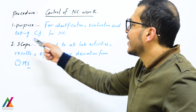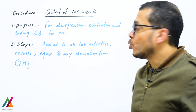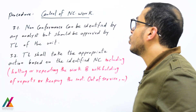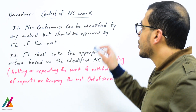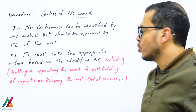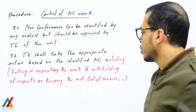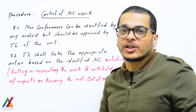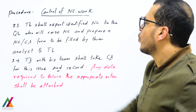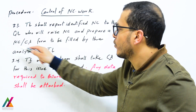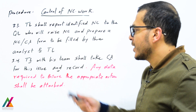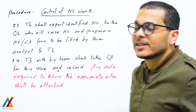The non-conforming work procedure — control of non-conforming work — has the purpose of identification, evaluation, and taking corrective action for non-conforming work. Its scope applies to all activities, results, equipment, and any deviation from the quality management system inside the lab. In the procedure: non-conformance can be identified by any analyst but shall be approved by the technical lead, who shall take appropriate actions such as halting or repeating the work, withholding reports, or keeping equipment out of service.